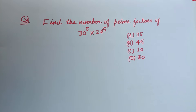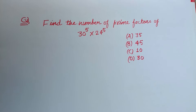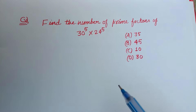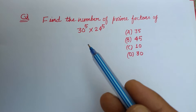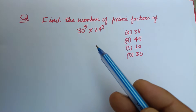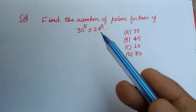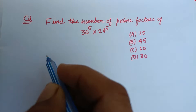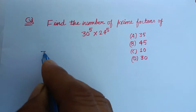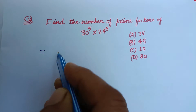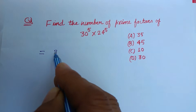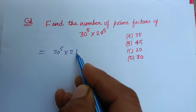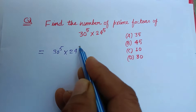Hello viewers, warm welcome to this YouTube channel. Find the number of prime factors of 30 to the power 5 into 24 to the power 5.